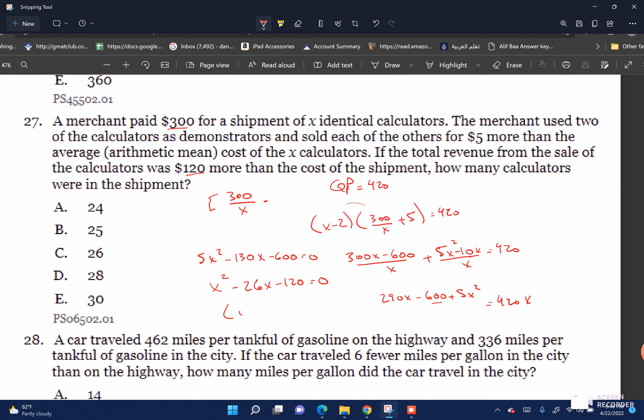That gives X squared minus 26X minus 120 equals 0. Using reverse FOIL: X minus 30 times X plus 4 equals 0, so X equals positive 30 or negative 4. It can't be negative in a real-world amount, so the answer is 30.